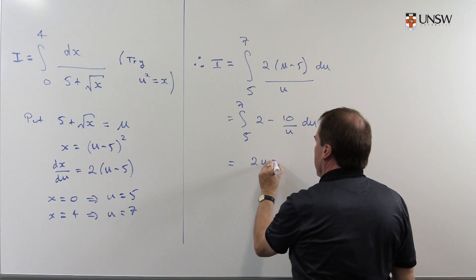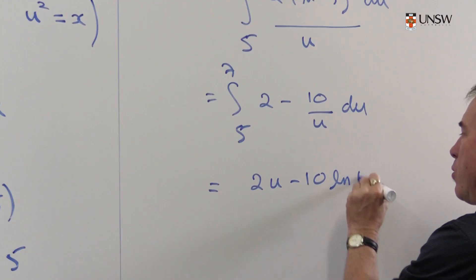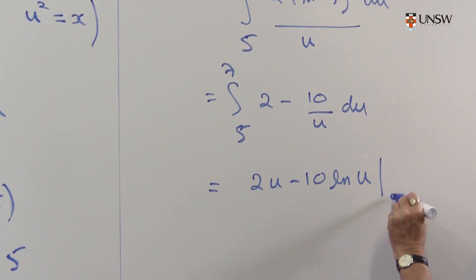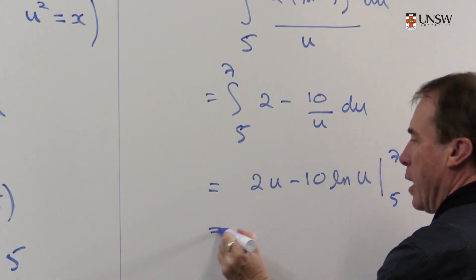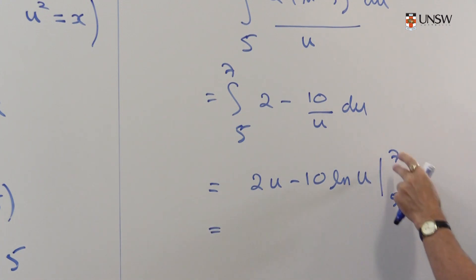So that just gives me 2u minus 10 log u. We're happy now because we have a nice easy integral. And now we plug in the endpoints and subtract.